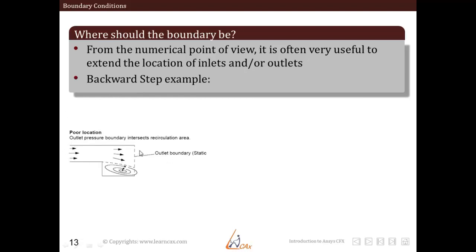An example here is a backward step example where we are seeing that the outlet boundary is located here and there is some sort of reverse flow happening. If we cannot quantify this recirculation and give it as a boundary condition, it is very difficult to get a correct solution out of such type of boundary location.